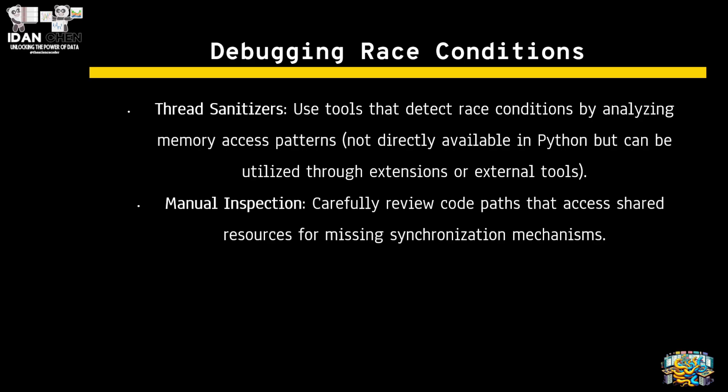How can you debug race conditions? You can use thread sanitizers — tools that detect race conditions by analyzing memory access patterns. Or use manual inspection: carefully review code paths that access shared resources. If you wrote the code yourself it's easier, but if you're working with someone else's code, you need to do a code review and find all the places where shared memory resources are used.